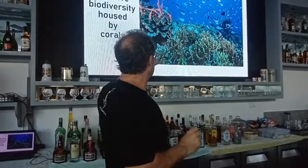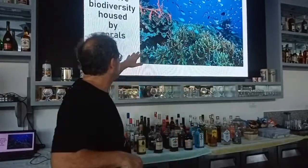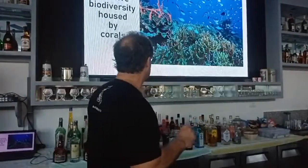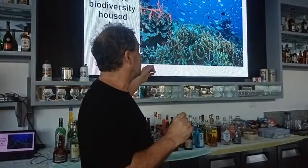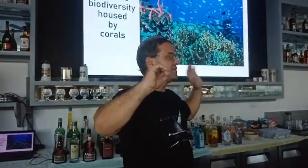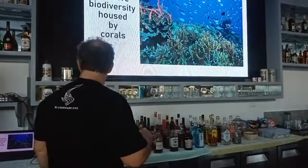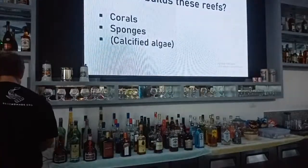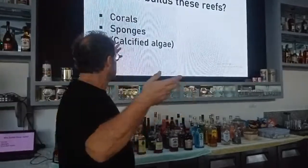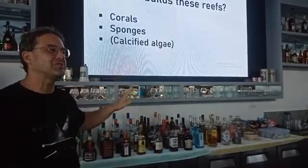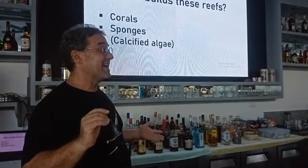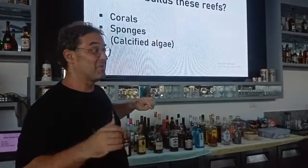Basically what I'd like to talk about in the next 20 minutes is: what are we talking about when we talk about corals? What kind of organism is this, and how are they related to other reef-builders — particularly sponges? The main reef-builders are corals — mostly hard corals — sponges, and calcified algae, which are interesting but not particularly pretty. I'm really going to focus on the first two groups.